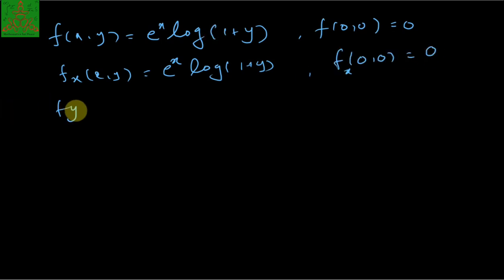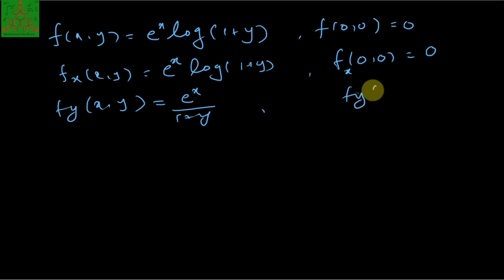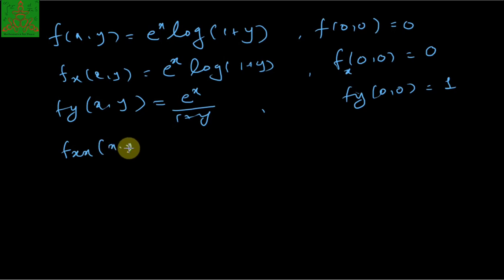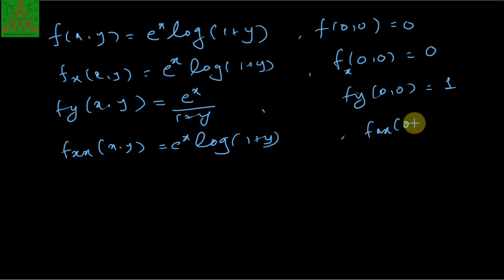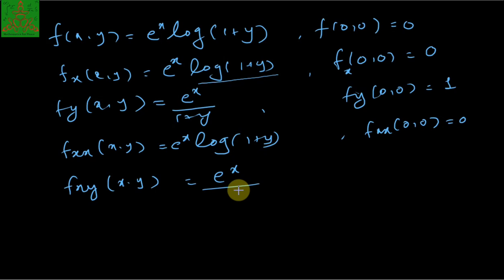f_y at (x,y) = e^x / (1+y), so f_y at (0,0) = 1. f_xx is the same as f_x differentiated with respect to x, which gives e^x · log(1+y), unchanged. So f_xx at (0,0) = 0. f_xy at (x,y) = e^x · (1/(1+y)), since the derivative of log(1+y) with respect to y is 1/(1+y).